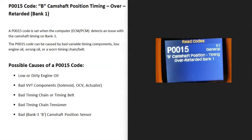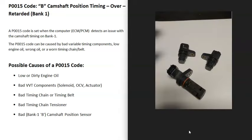Today I'm talking about a P0015 code — what it is and how you go about fixing it. A P0015 code is a B camshaft position timing over-retarded bank one. Basically, there's a sensor called the camshaft position sensor that monitors the camshaft as it spins and reports this information back to the computer. The computer is seeing that the camshaft position is off — that there's some kind of issue with the timing on bank one.